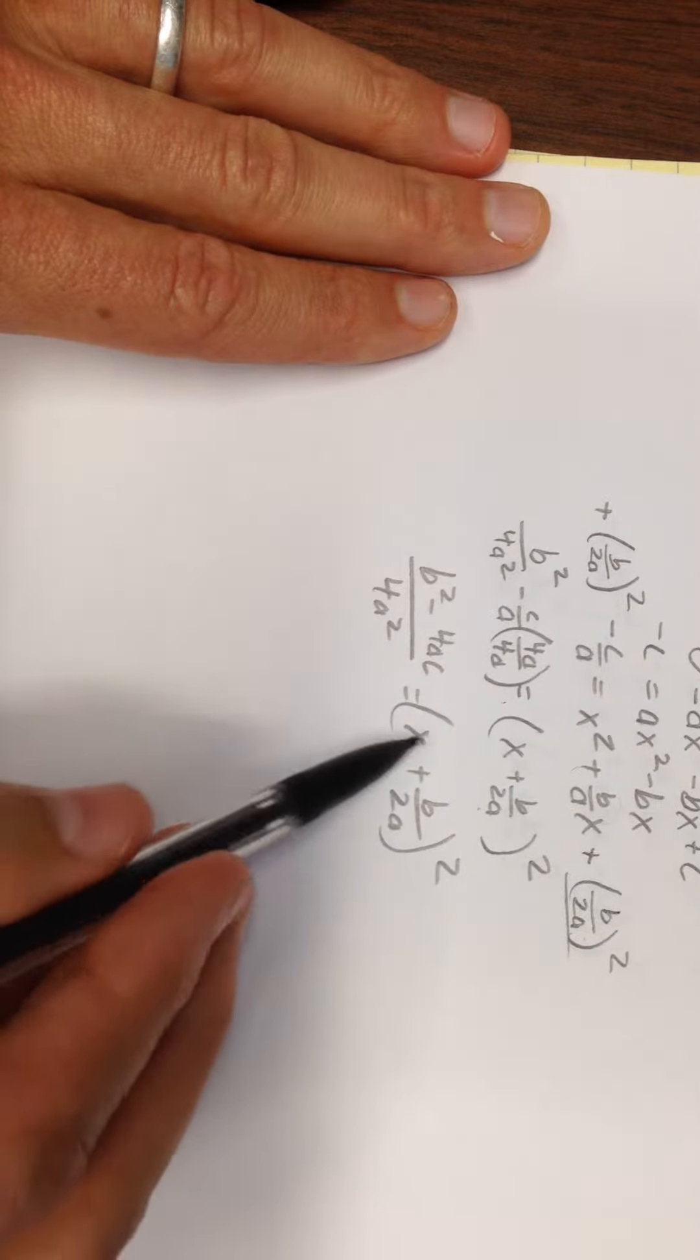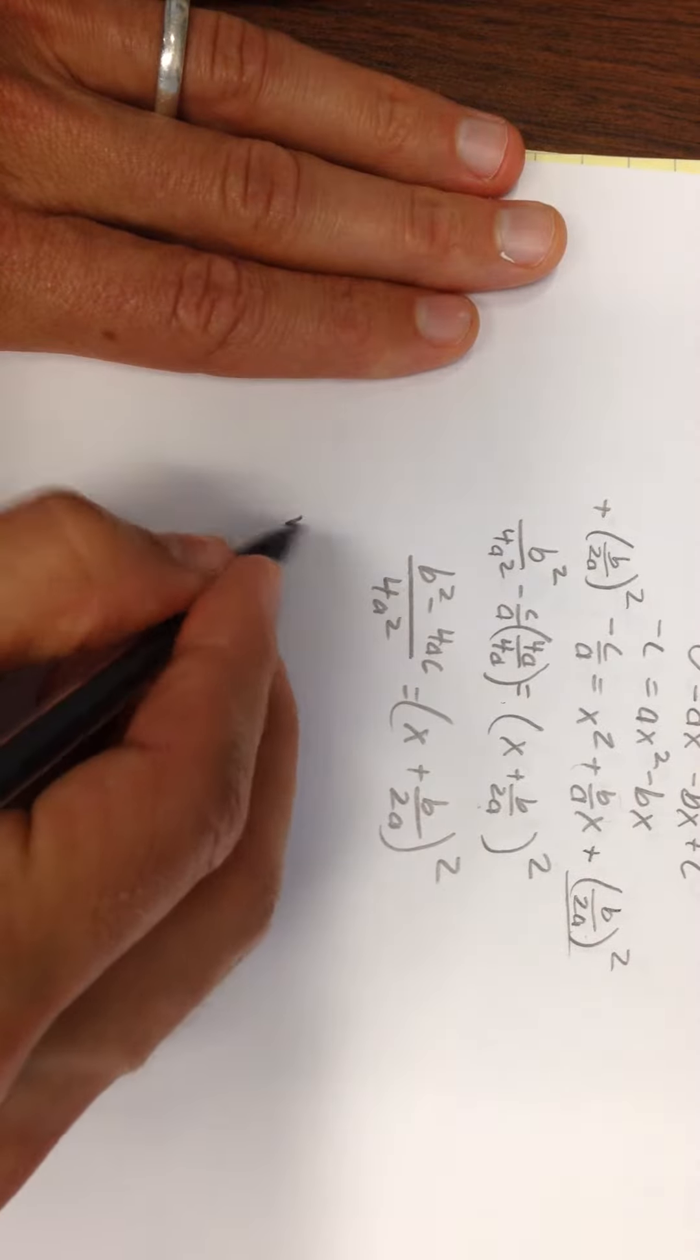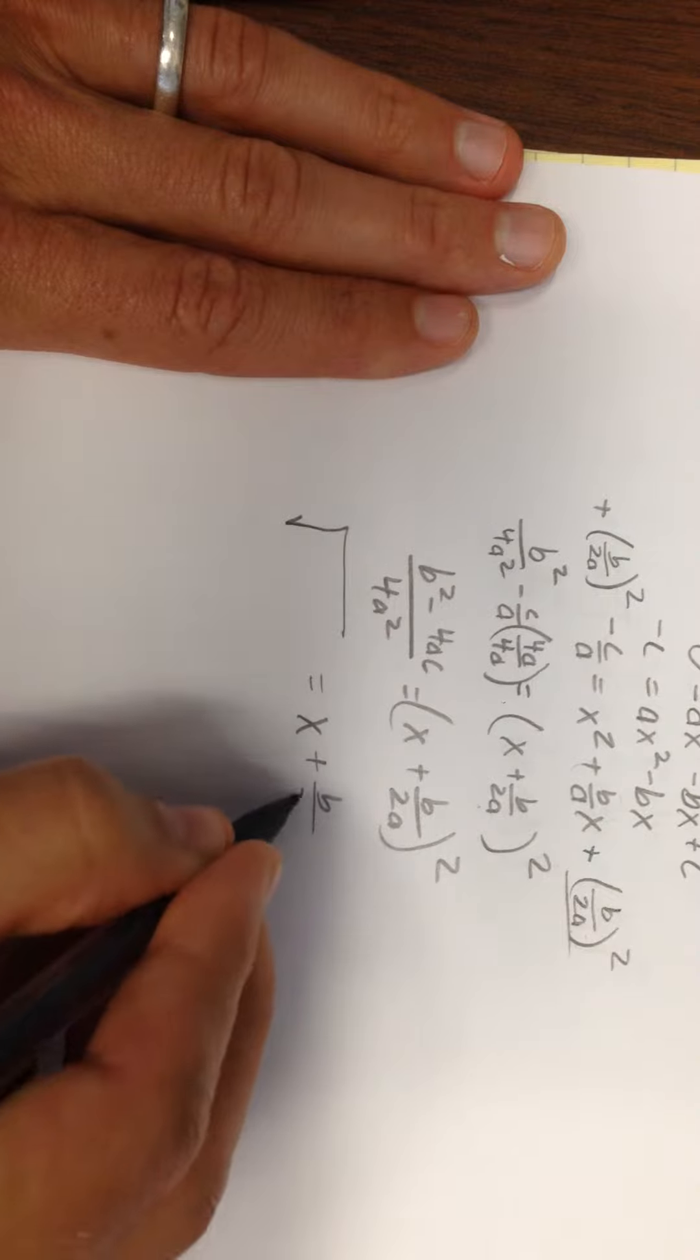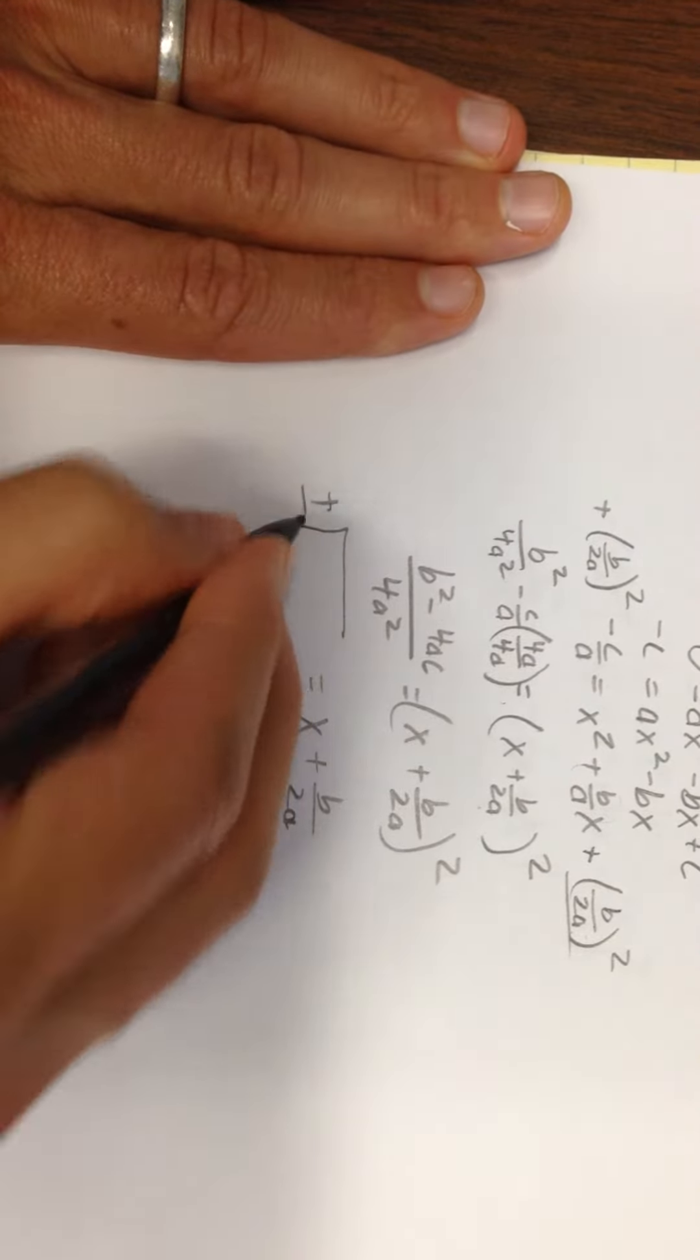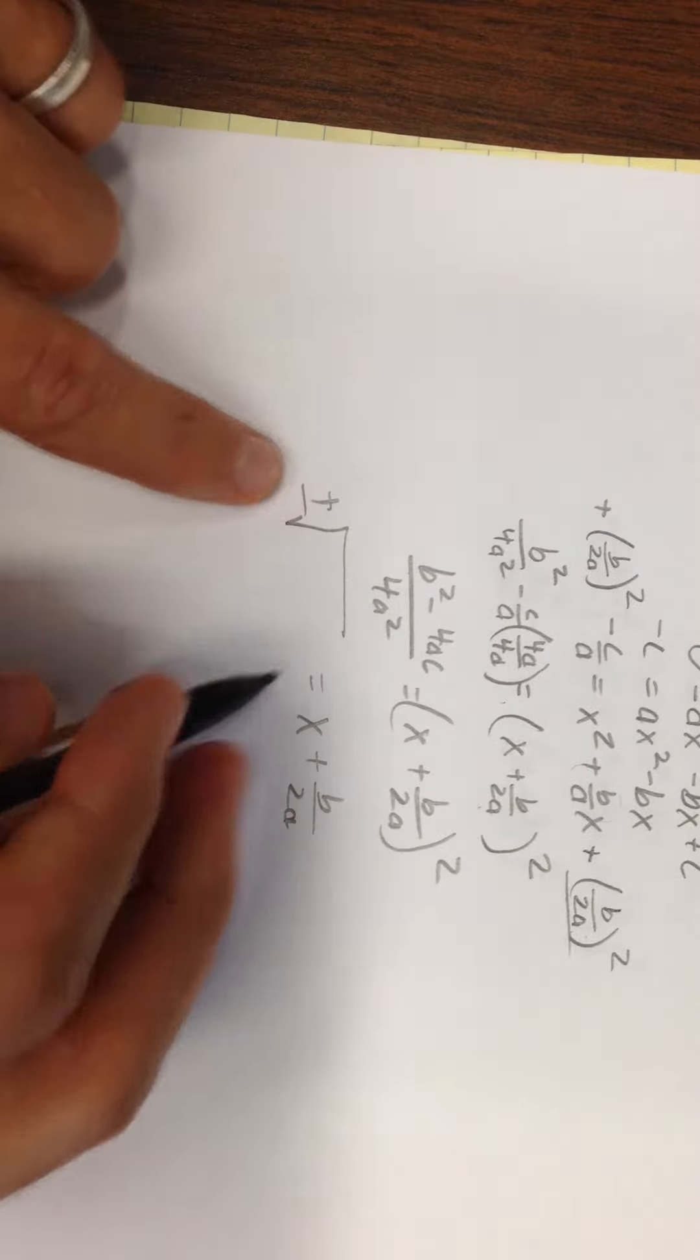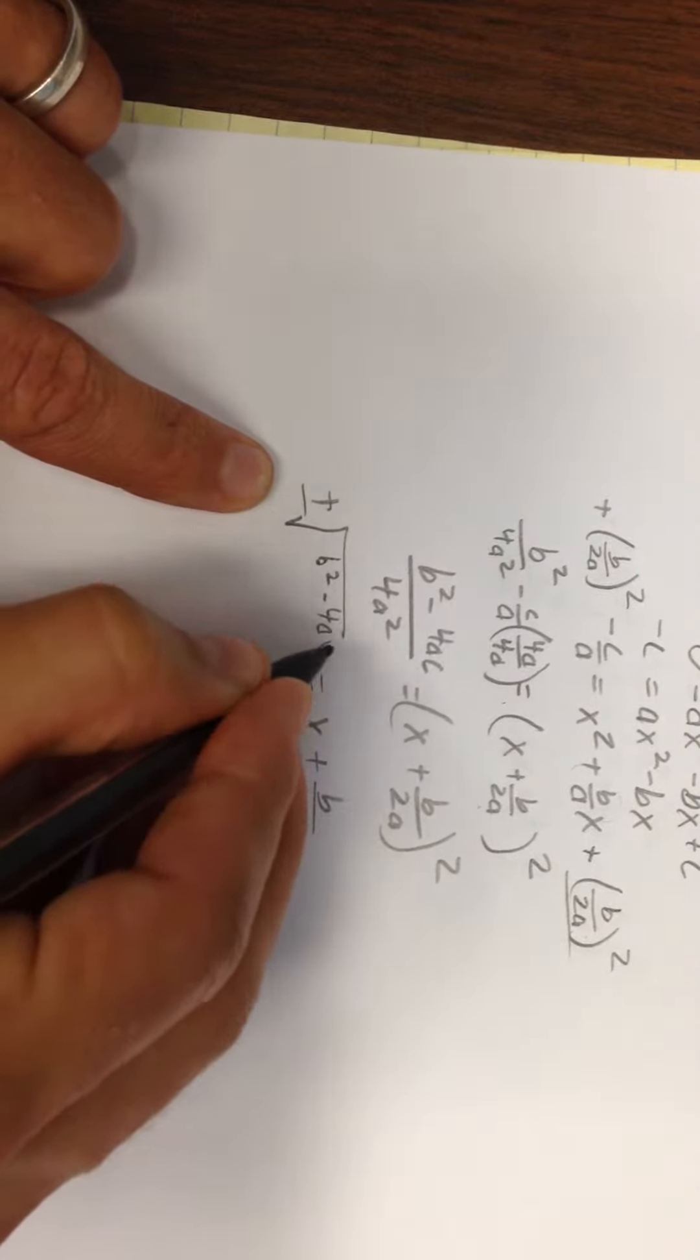Now I don't know whether the piece inside here is negative or positive. So I'm going to take the square root of both sides. But I'm going to allow for the fact that this could be negative or positive by putting a plus or minus over here. Why do I put it on that side? I'm trying to get the x by itself.